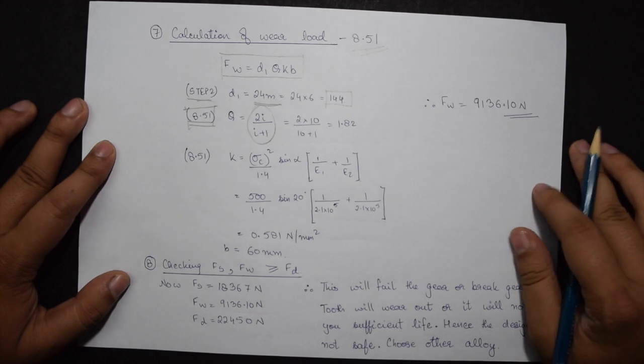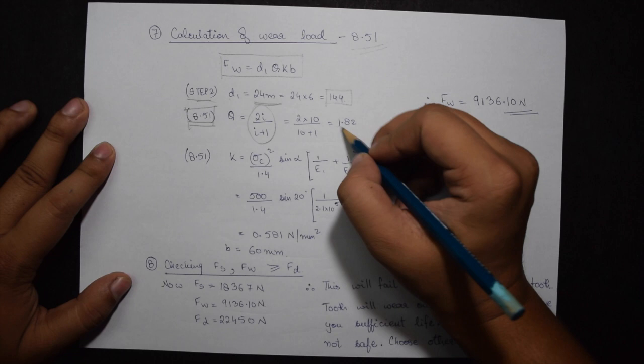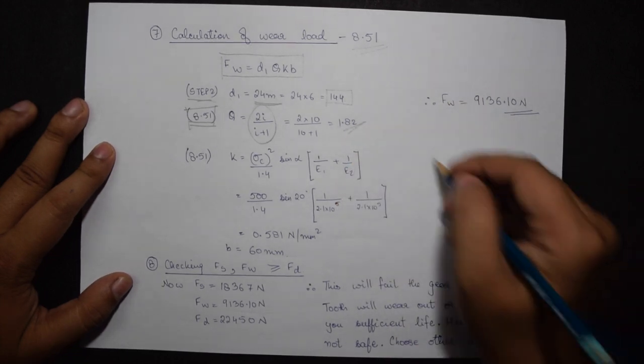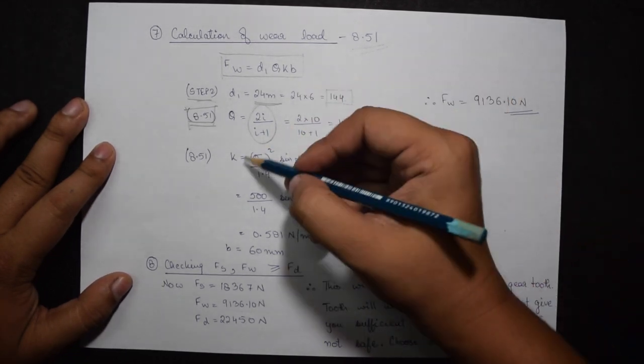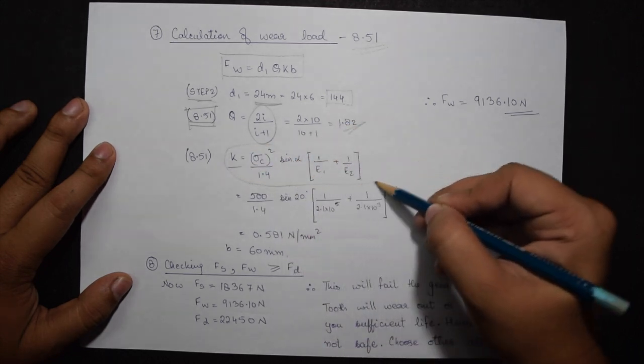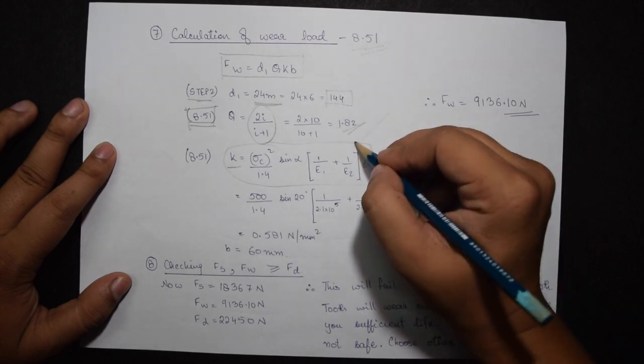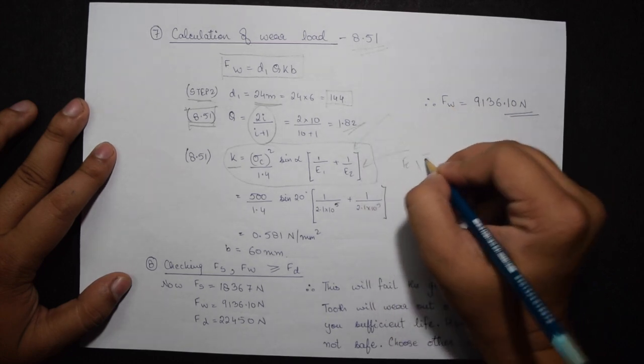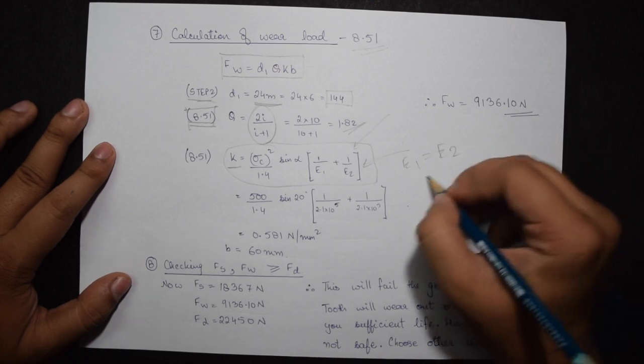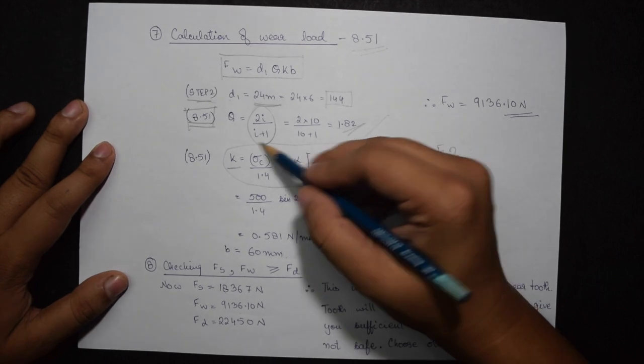From the question, the value of i was 10, therefore this comes out to be 1.82. Just above the value of Q we have the formula for K, which is sigma C square divided by 1.4 sin alpha times 1 by E1 plus 1 by E2. E for both materials is the same, that is 2.1 times 10 to the power 5. Alpha is 20 degrees. Sigma C we had found out in step 1.